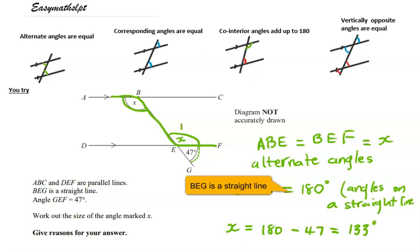So this was my method. You could have started with vertically opposite angles, and then you could have gone to use co-interior angles. You would have gotten the same answer. Okay, well done, and I'll see you next time.